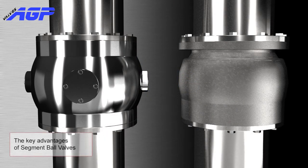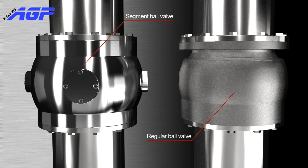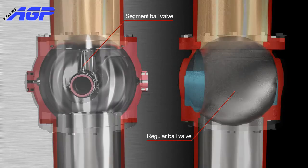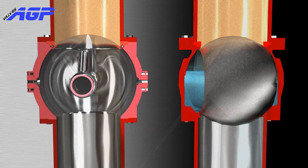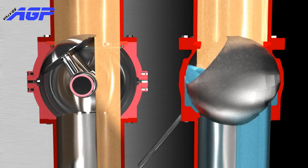The main key advantages of segment ball valves are shown compared to other types of valves. For example, regular ball valves have a large dead space between the housing and the bore. In these hidden cavities, product collects and contaminates the next batch. Whereas the segment ball valve empties completely, with no dead space or cavities where product can collect.